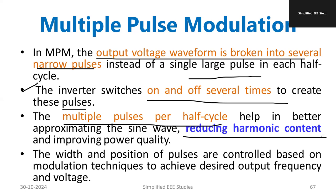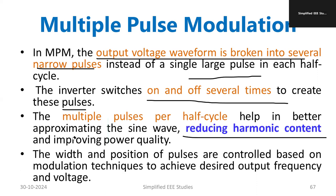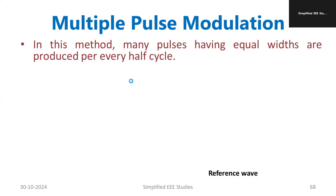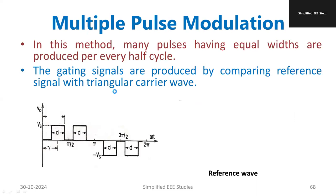The harmonic content will be minimized. If the harmonic content is minimized, our power quality will be improved. If power quality is improved, the lifespan of the equipment will be improved, and you can operate equipment with a longer lifespan. Maintenance cost will also be reduced. These are the plus points of improving power quality. The width and position of the pulses are controlled based on the modulation technique, using a reference signal and control signal accordingly.